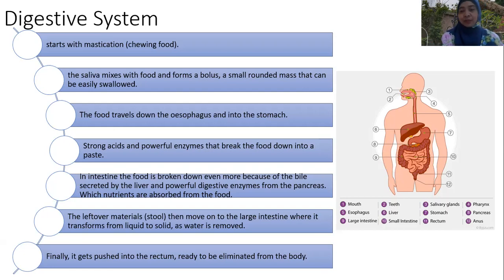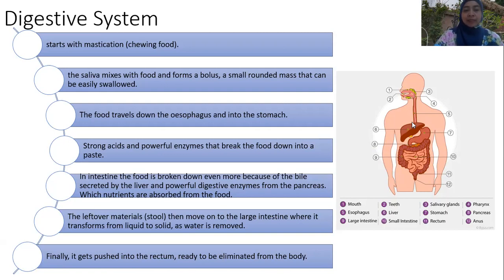The food travels down the esophagus into the stomach, where strong acid and powerful enzymes break the food into a paste. In the intestine, the food is broken down even further by bile secreted by the liver and digestive enzymes from the pancreas. Nutrients are absorbed, and the leftover material — stool — moves to the large intestine, where liquid transforms to solid as water is removed, then passes to the rectum to be eliminated.